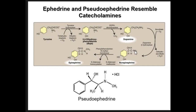Looking at the nitrogen substituent, norepinephrine has NH2 while epinephrine has a methyl group on nitrogen. This means that pseudoephedrine and epinephrine differ mainly at the aromatic ring — there are hydroxy groups missing. Ephedrine and pseudoephedrine resemble catecholamines in overall structure.